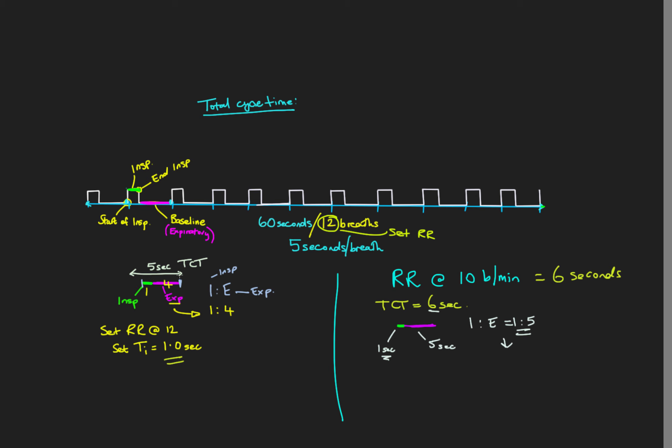The IE ratio added to the total cycle time equals the total amount of time in one ventilatory cycle — from the start of one breath to the start of the next. In the next video we'll get more involved in how modes of mechanical ventilation work and how to manipulate IE ratios.